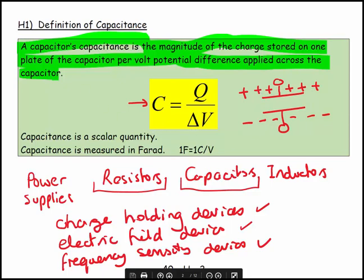Capacitance is a scalar quantity, so we don't have to worry about directionality. Capacitance is measured in farads, named after Faraday, and this is one of those named units.